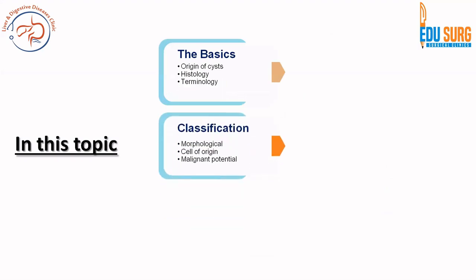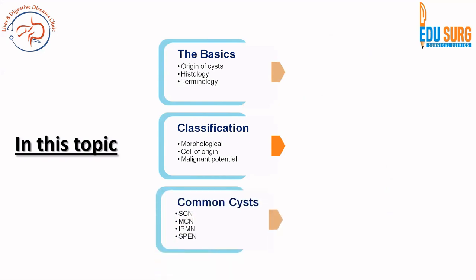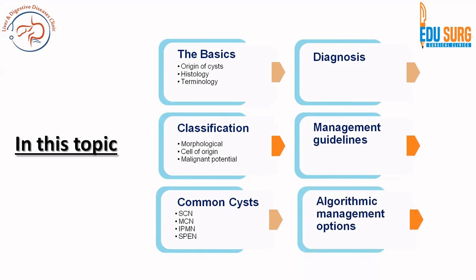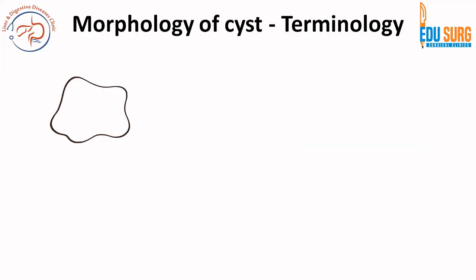We have already seen the basics and the cell of origin. If you missed the last video, do have a look. Today we will discuss the classification part, and from upcoming parts of this series we will look at the common cysts, serous cystic and mucinous cystic neoplasms, the solid pseudopapillary epithelial neoplasm, guidelines, and practical algorithmic management.